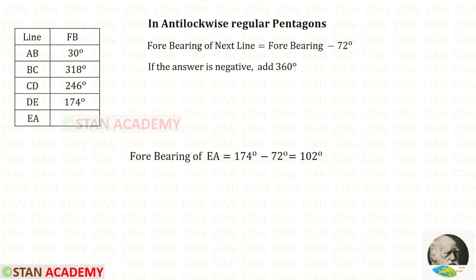Let us find the forebearing of EA. 174 degrees minus 72 degrees gives 102 degrees. Now let us apply a check. We know the forebearing of AB is 30 degrees. Using this angle, let us find that again.